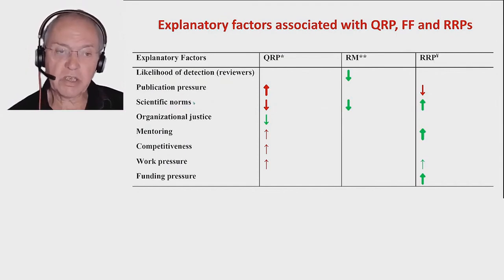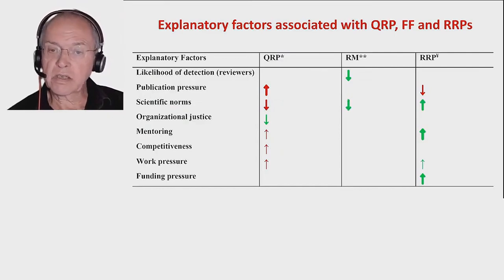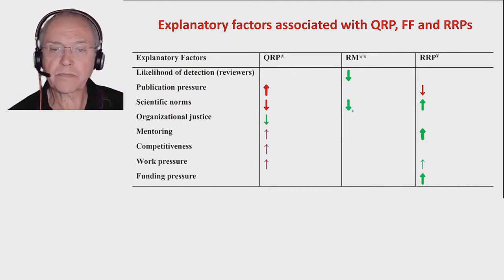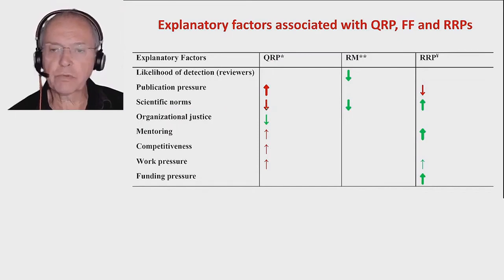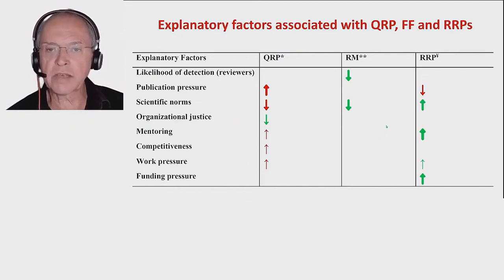Scientific norms — basically adherence to the Mertonian norms, self-reported — when that was the case, it was associated with lower questionable research practices and also lower research misconduct, which is good of course. I should clarify here that adherence to the norms is associated with less misconduct — this should be a green arrow. So scientific norms help as well. I'll leave out the others on the slide — you can look at them yourself, and again, look at the preprint if you want.